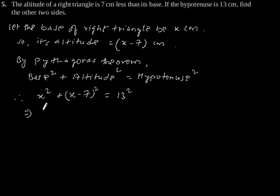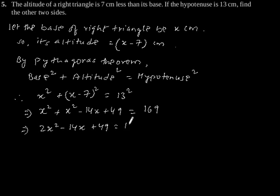This implies x square plus x square minus 14x plus 49 is equal to 169. Which implies 2x square minus 14x plus 49 is equal to 169. Which implies 2x square minus 14x minus 120 is equal to 0.